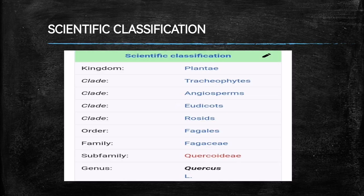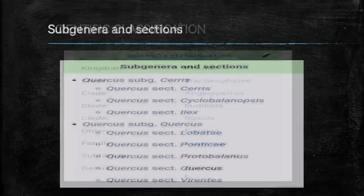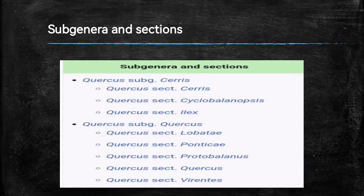Here is the scientific classification of oak. It belongs to the kingdom Plantae and its clade includes tracheophytes, angiosperms, eudicots, rosids, and fagales. It belongs to the family Fagaceae and the genus Quercus L. Here are the subgenera and sections of the oak tree.